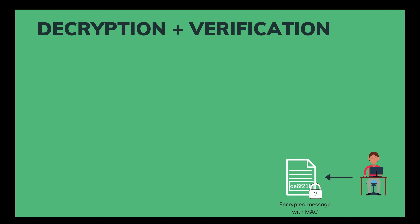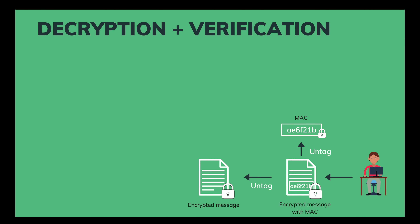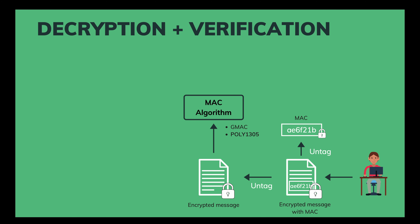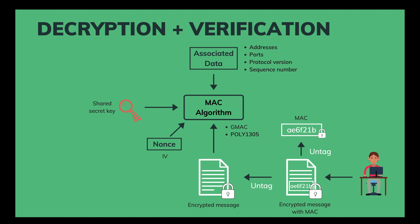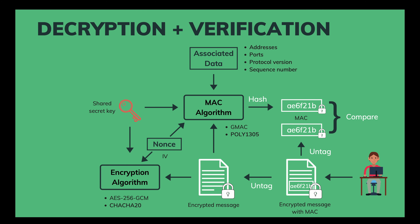Now let's see how Bob can check that the encrypted message hasn't been changed during transmission. It's simply a reverse process, starting with the encrypted message with MAC. We untag the MAC from the encrypted message. Then the encrypted message goes to the MAC algorithm together with the shared secret key and the nonce — the same nonce used in the encryption process, which is usually paired to the encrypted message before sending. The associated data also goes into the MAC algorithm, and the output is another MAC. Bob simply compares the two MAC values. If they are different, he knows the encrypted message has been changed. Otherwise, he can safely decrypt the message with confidence that it's the same plaintext Alice sent.